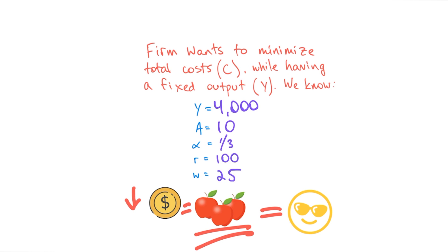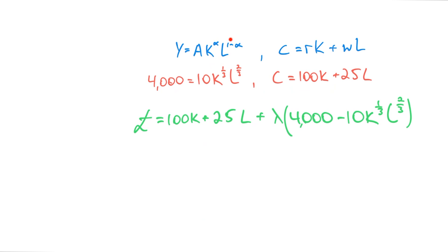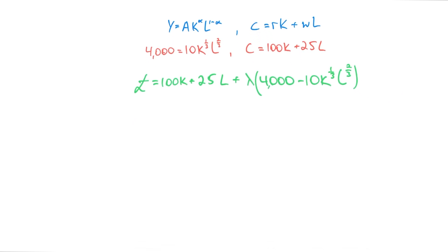So knowing this, let's set up the Lagrangian. Like before, we have our production function up here and the cost function. But now we plug in the numbers that we know. For the production function we'll have 4,000 equals 10 times capital to the one-third times labor to the two-thirds. The cost function will be 100K plus 25L. Now we can set up the Lagrangian with the production function under the Lagrange multiplier.